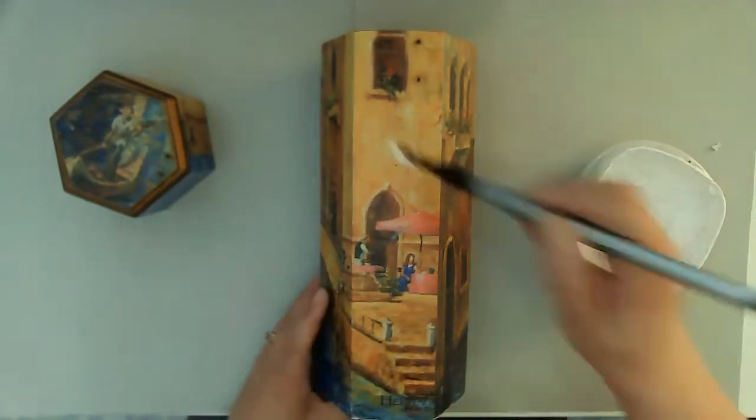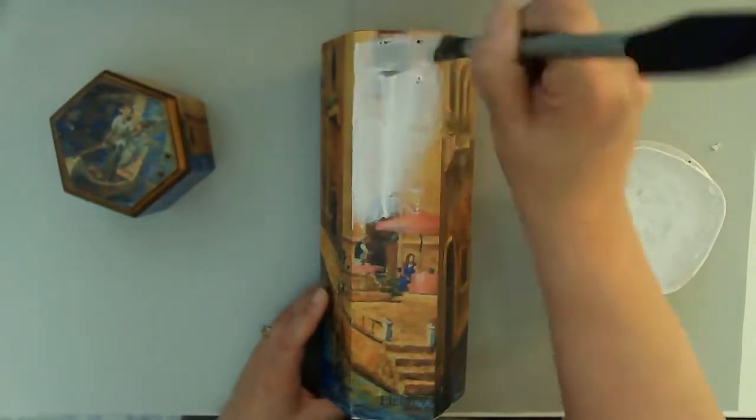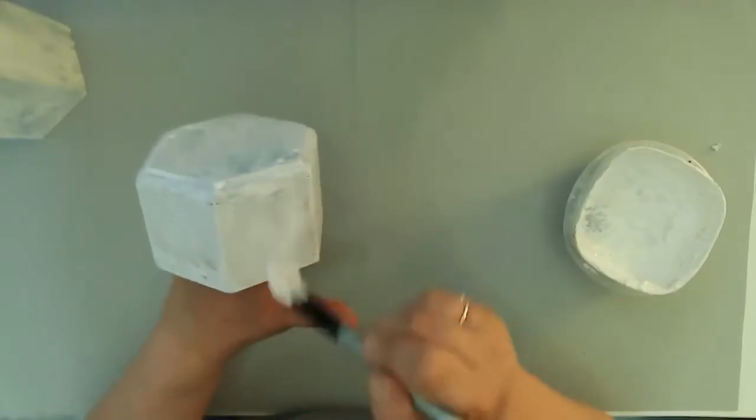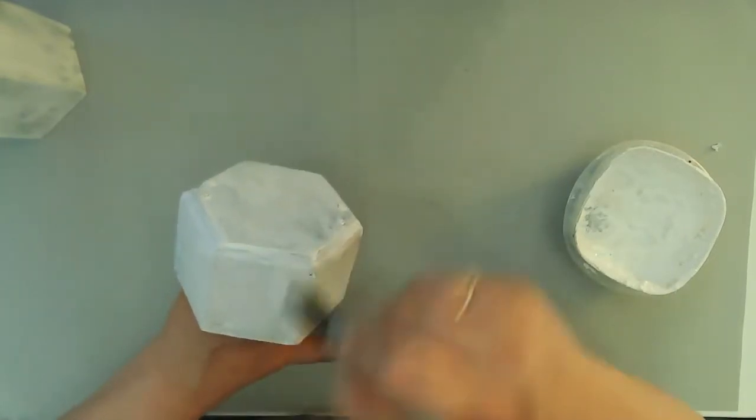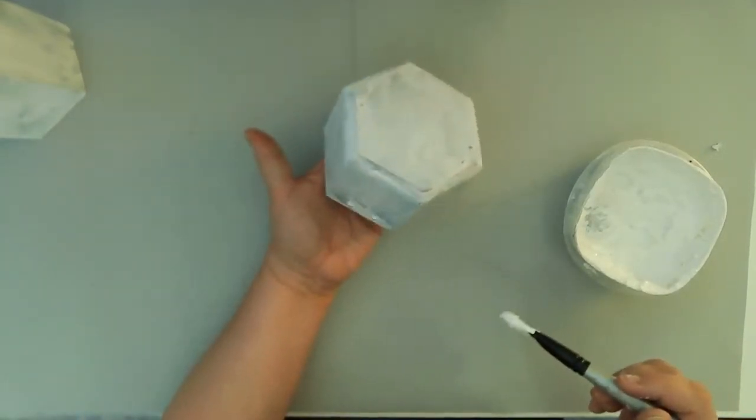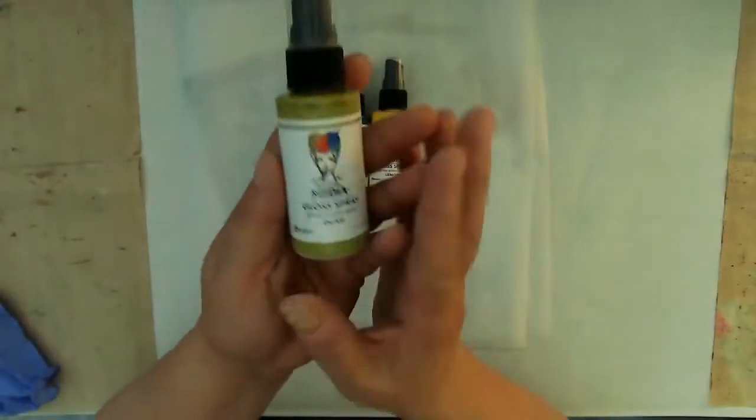So the first thing I'm going to do is go ahead and give it a good coat of gesso on all sides. It does only require one coat. I just wanted to make sure that anything that I was doing on the surface would adhere well.